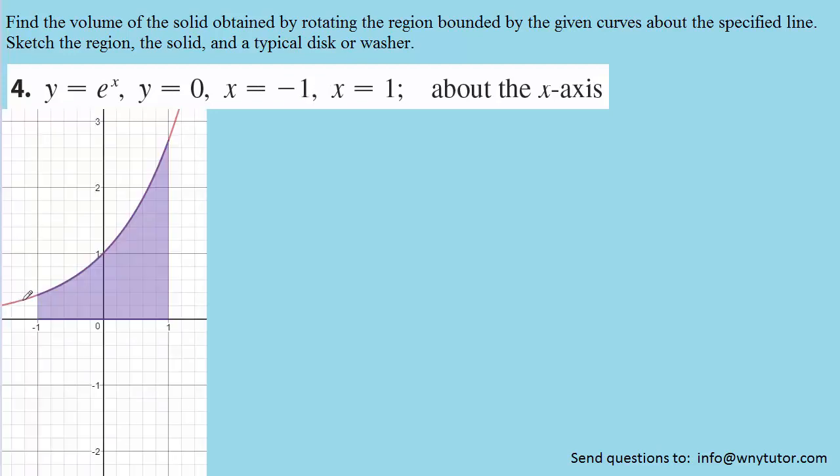So in red here we have the curve defined by y equals e to the x. Right here is x equals negative 1, here we have x equals positive 1, and then the x-axis is defined as y equals 0.